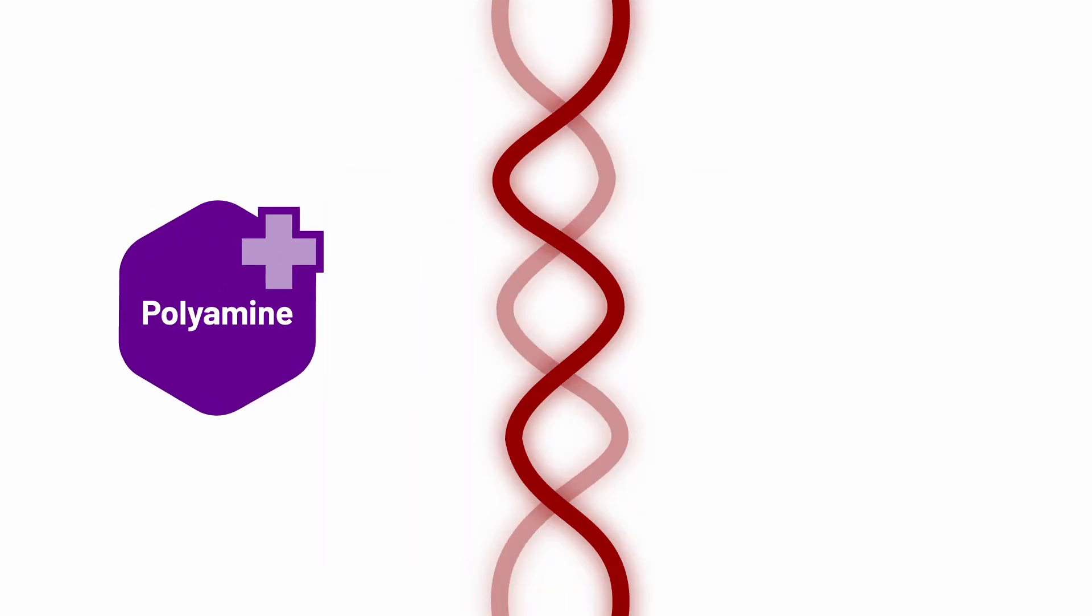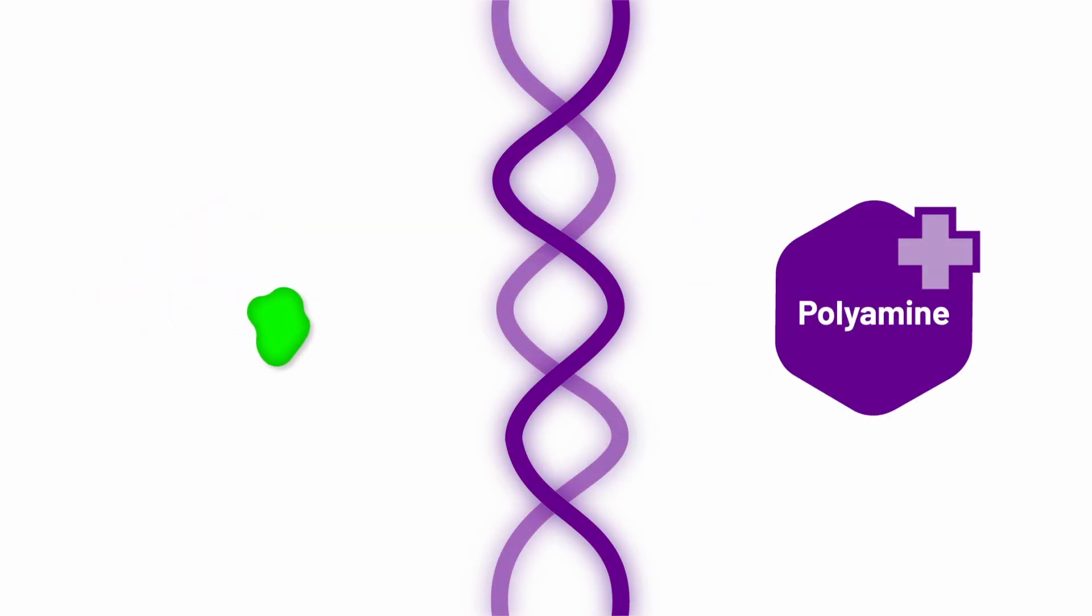Spermidine is derived from wheat germ and belongs to a class of molecules called polyamines. Polyamines are positively charged molecules similar to NAD+ and are important in stabilizing bulky, negatively charged molecules like RNA, DNA, and proteins. They keep them stable and free from attack by stressors, and are important for cell growth, cell repair, and inducing autophagy.